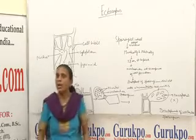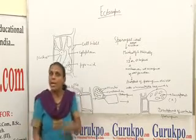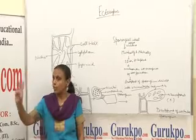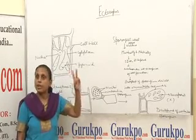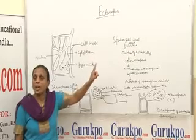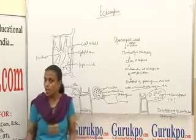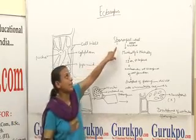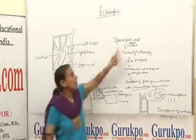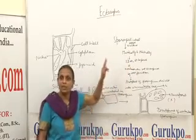Moving towards asexual reproduction in Ectocarpus — it occurs by means of biflagellate zoospores. The diploid plant body of Ectocarpus consists of two types of sporangia: plurilocular sporangia and unilocular sporangia. As you are seeing in the diagram, I take up the development of the unilocular sporangium in Ectocarpus. The terminal cell of the branchlet becomes enlarged in size and functions as a sporangial initial. The diploid nucleus of the sporangial initial undergoes meiotic divisions to form 32 or 64 haploid nuclei, as is clearly shown in the diagram.